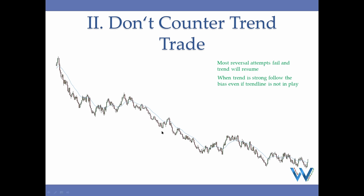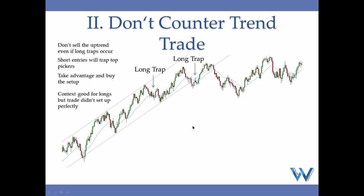Only when you get a trend proven in the opposite direction can you start looking for entries in that trend. Under no circumstances can you pick tops or bottoms — trend probabilities are not in your favor. Most traders lose money trying to pick tops and bottoms. Markets are designed to make counter-trend entries look favorable, and designed to make with-trend pullbacks look sketchy. For that reason, a lot of traders attempt to buy the bottom in strong downtrends.